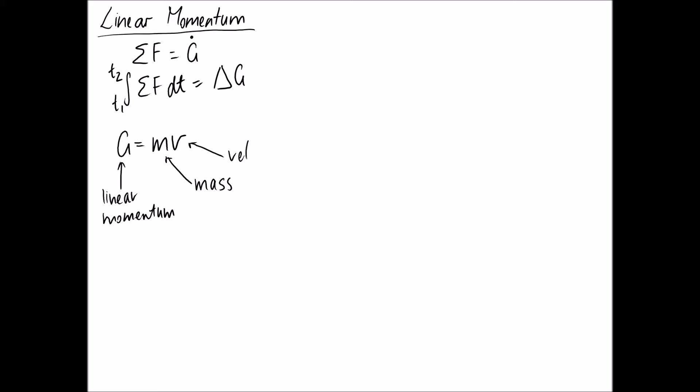On the left is your linear momentum. This here is your mass, and this is your velocity. You can compute the units for linear momentum by multiplying the other two together: mass is kilograms, velocity is metres per second, so the units are kilogram metres per second. There is no special simplified unit for linear momentum.